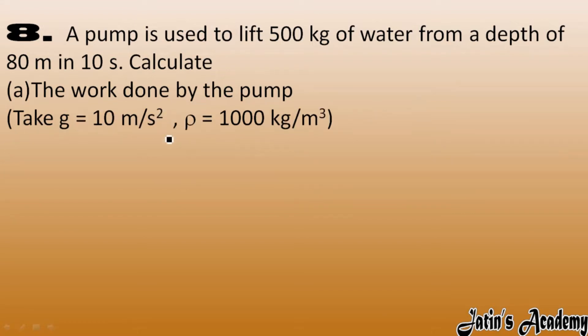So first part, we have to calculate the work done. We know that work done equals force into displacement, and force in this case is mass into gravity and displacement is s or h. So mass value we have 500, g value is given as 10, and height is 80 meter, so here we got it as 40 with 1, 2, 3, and 4 zeros.